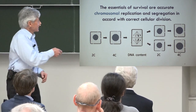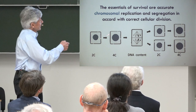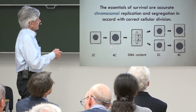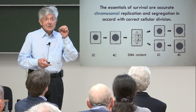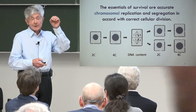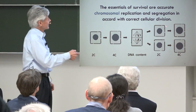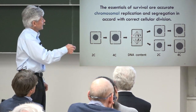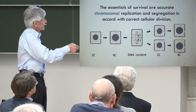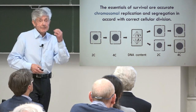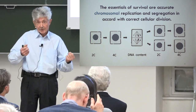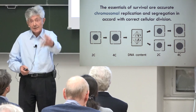The essentials of survival are accurate replication and segregation in accord with correct cellular divisions. This is true for prokaryotes and eukaryotes alike. The scheme below is an example of a eukaryotic cell division. The minimum C content is the cell with unreplicated chromosomes — as in a sperm — and this is half. These two chromosomes would be 1C, this is 2C, and this is 4C. One implication of cell division is that DNA content is halved, so it has to replicate again to start the next division.